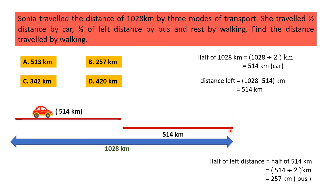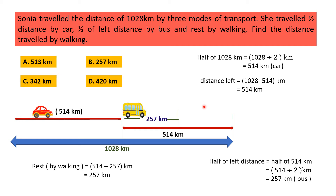Sonia traveled 257 kilometers by bus — that was half of the remaining 514 kilometers. Now for the rest by walking: total remaining distance was 514 kilometers, she traveled 257 kilometers by bus, so distance traveled by walking is 514 minus 257 kilometers, that is 257 kilometers. So the correct option is B.